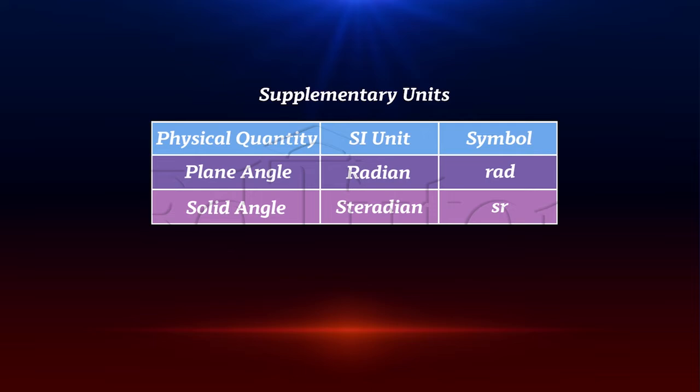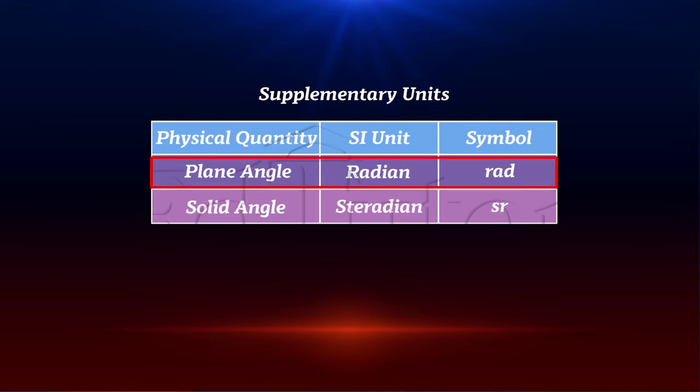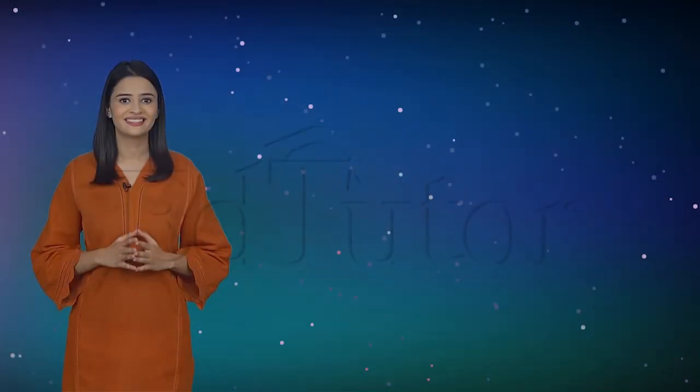At present, this class contains only two supplementary units related to geometrical figures. These are radian and steradian. If you look at the table on this side, you can see radian is the unit of plane angle, while steradian is the unit of solid angle.